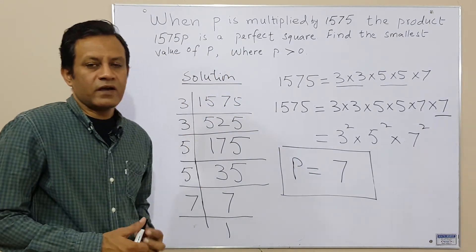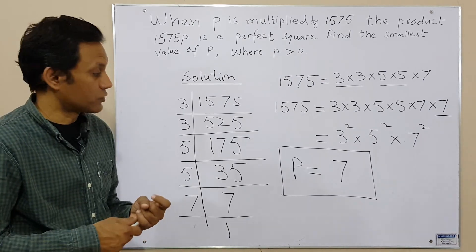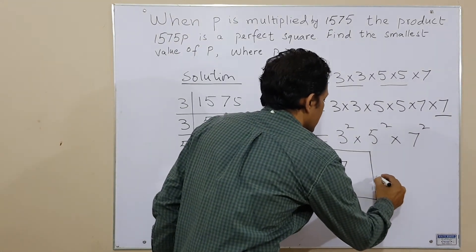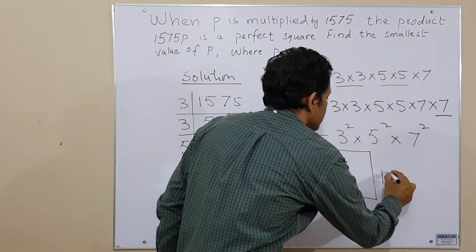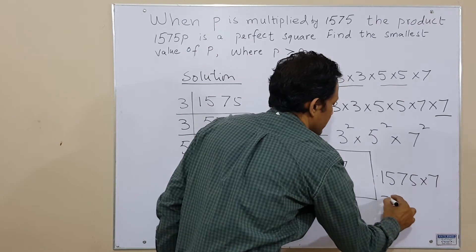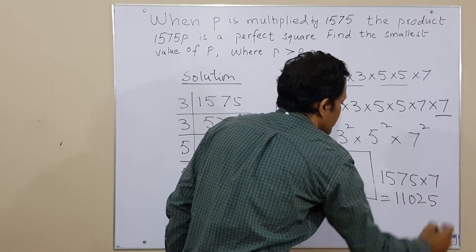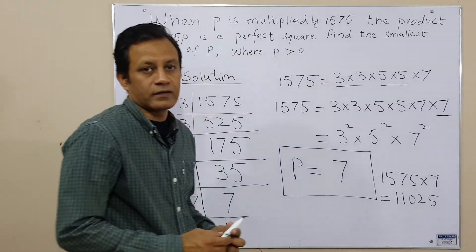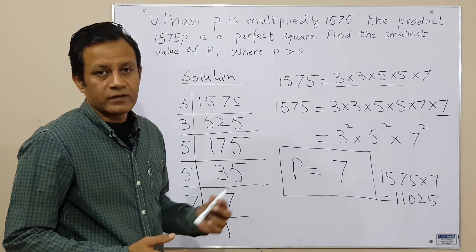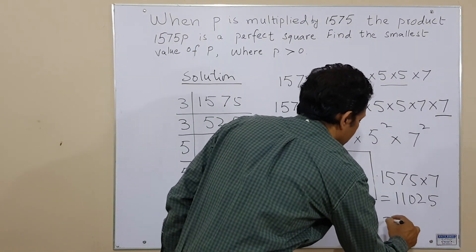When 1575 is multiplied by 7 it becomes 11,025, which is a perfect square. And the square root of 11,025 is 105.